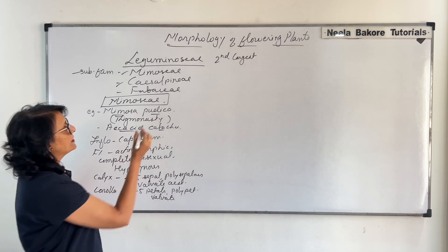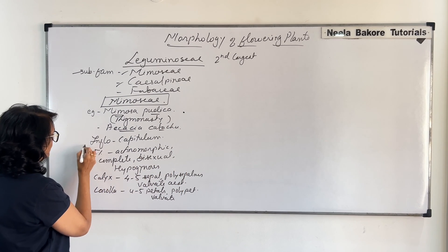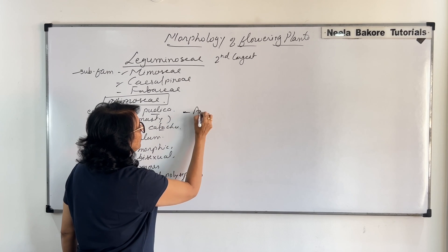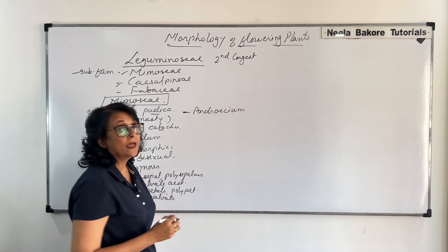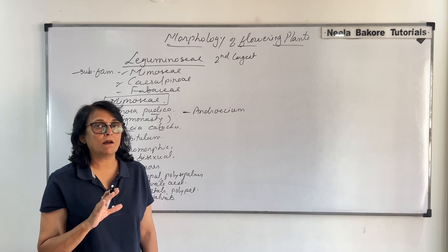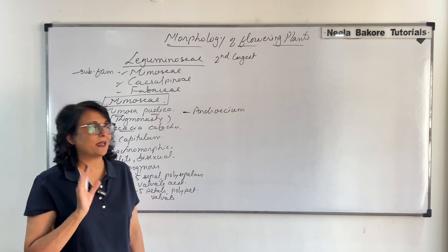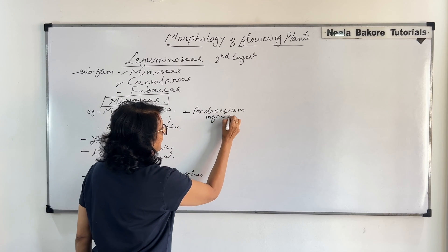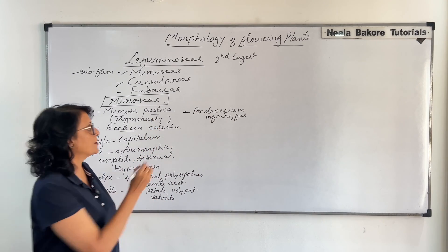Now let us come to the androecium, that is the male reproductive whorl. The number of stamens is normally infinite — that is, many stamens are there — so we normally write infinite and free, which means the condition is polyandrous.